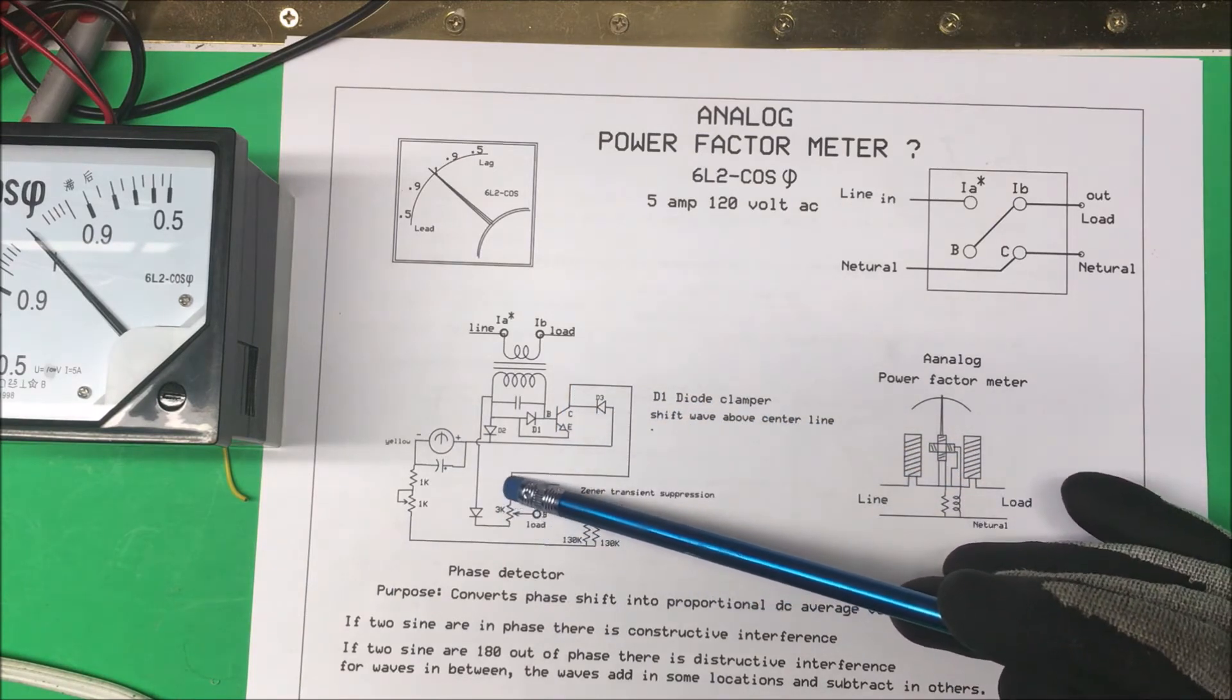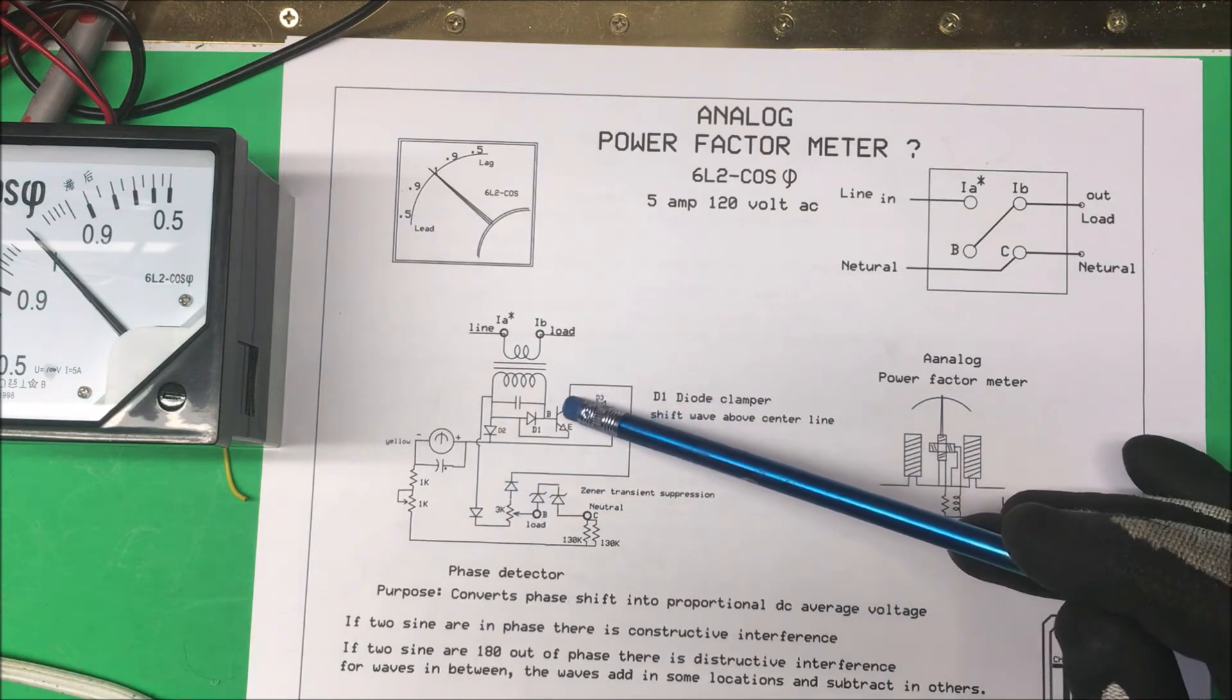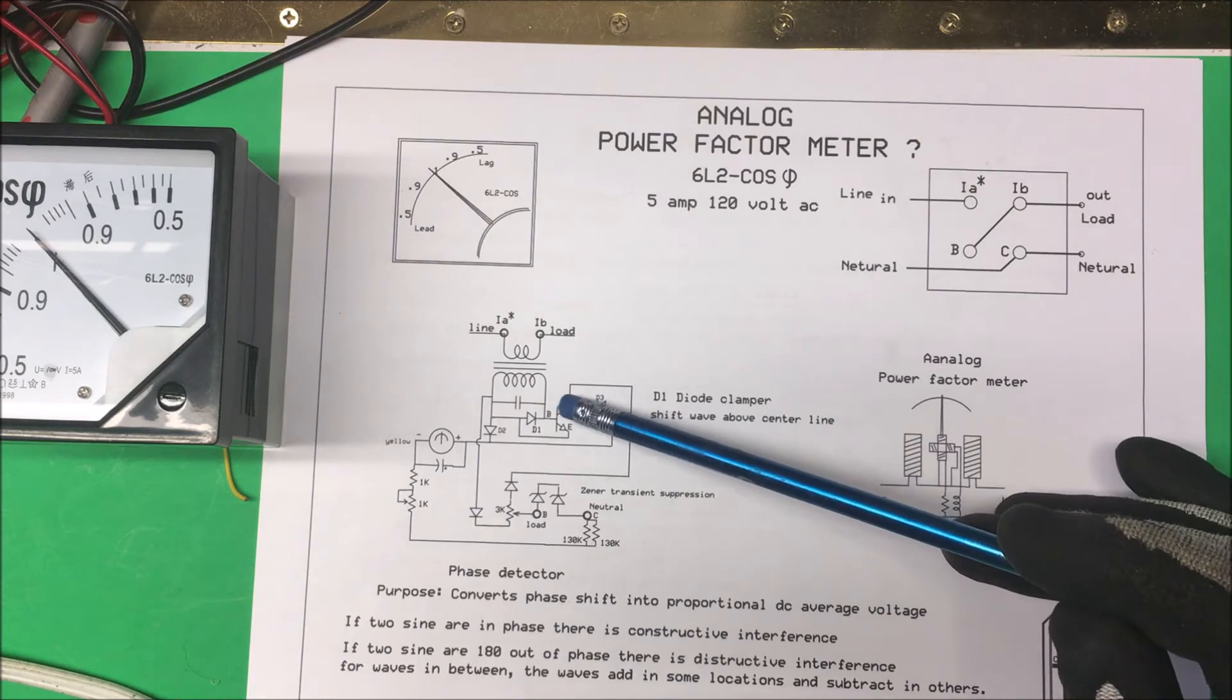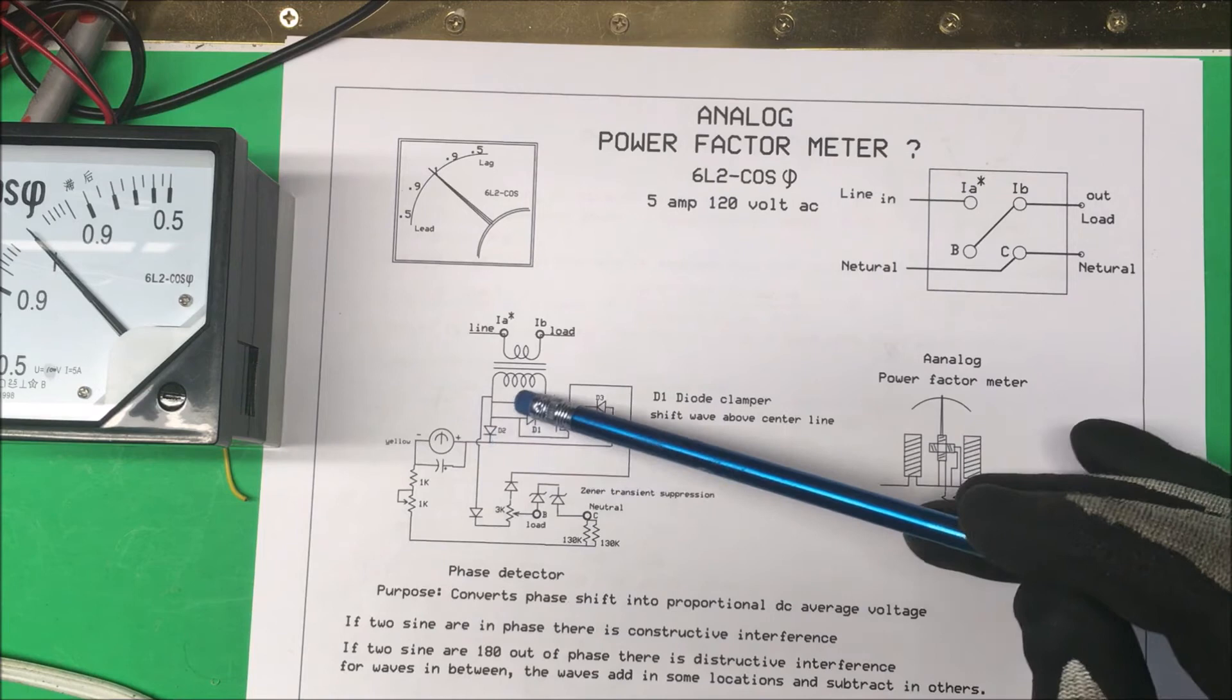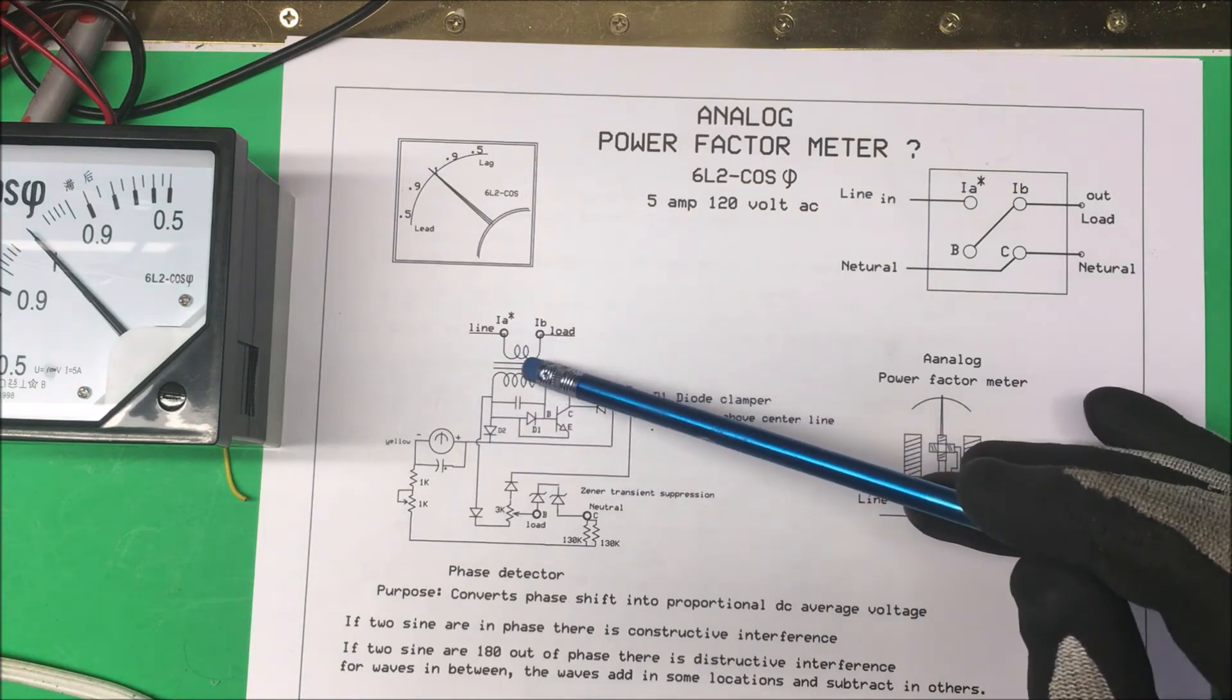We come up through this diode here and into the collector of the transistor here. Then it goes through the transistor when it turns on and out to the meter.